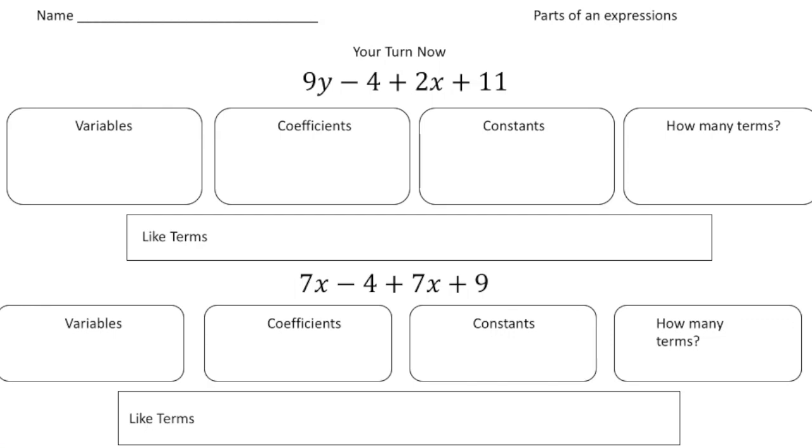Welcome back. Let's see how you did with these practice problems. So here we have the expression 9y minus 4 plus 2x plus 11. And we want to first identify the variables. So remember the variables are the letters, the unknowns. So here we have a y and we also have an x. So the variables are the y and the x.